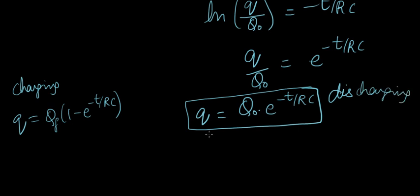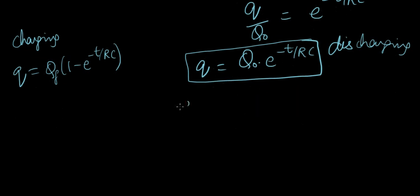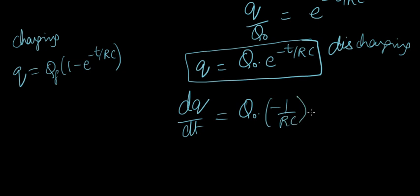And again, as we did before, if you want to find the equation for current, just differentiate this equation with respect to time. DQ over DT is differential of this is Q0 times minus 1 over RC times E power minus T over RC.